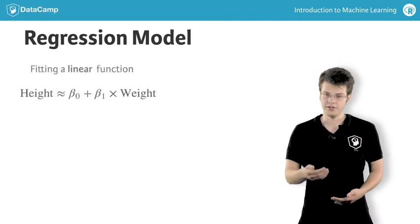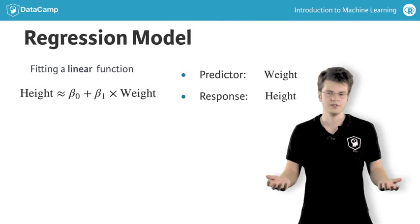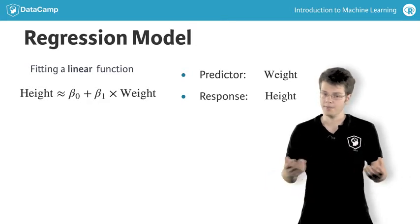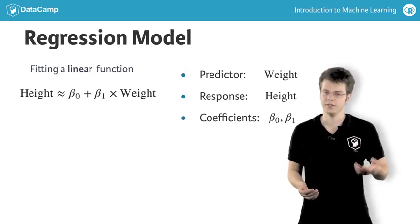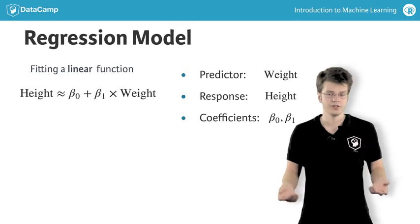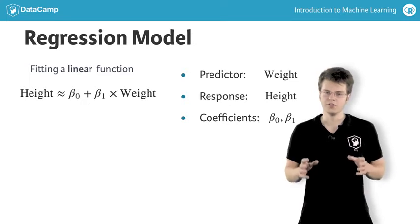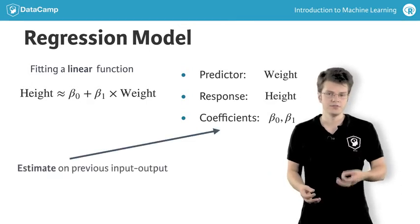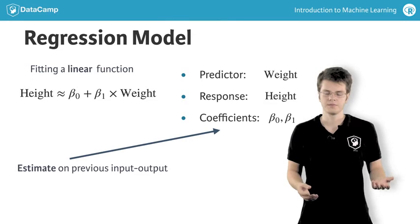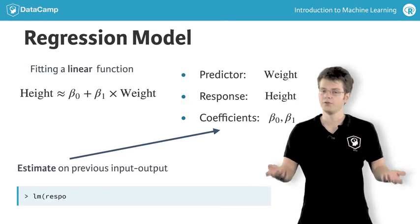Here, you're trying to fit a linear function between the predictor, the weight, and the response, the height. Together, beta0 and beta1 are known as the model coefficients or parameters. As soon as you know the coefficients beta0 and beta1, the function is able to convert any new input to output. This means that solving your machine learning problem is actually finding good values for beta0 and beta1. These are estimated based on previous input to output observations. I will not go into detail on how to compute these coefficients — the function lm does this for you in R.